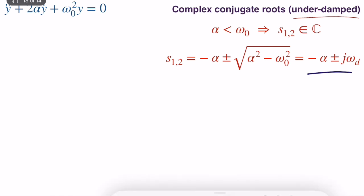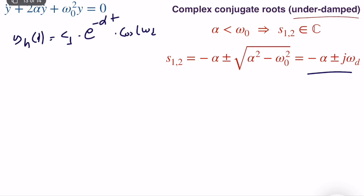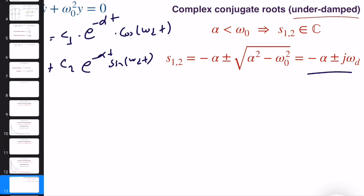To find the general solution for complex conjugate poles, we write: y(t) = C1·e^(−αt)·cos(ω_d·t) + C2·e^(−αt)·sin(ω_d·t). The exponential e^(−αt) determines the decaying envelope, while the cosine and sine terms produce oscillations. In some textbooks you may see this written as a single cosine with a phase shift; I will cover phase later in the course.